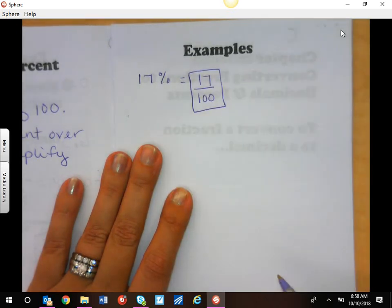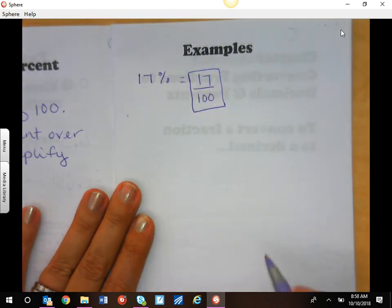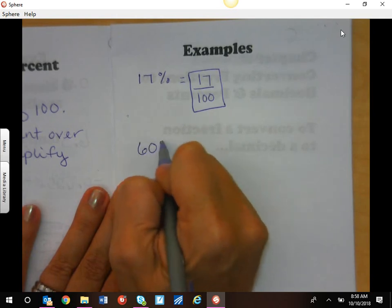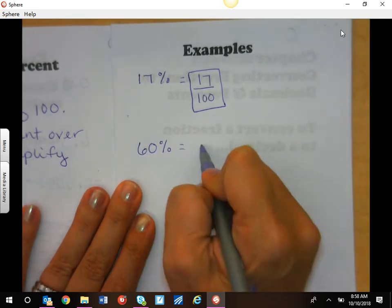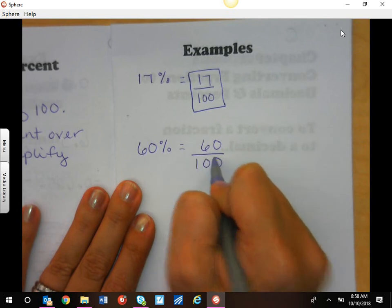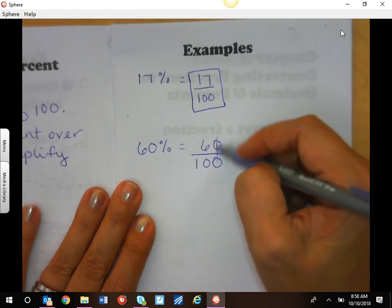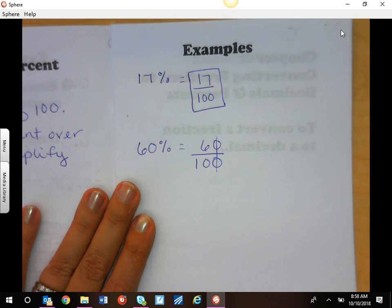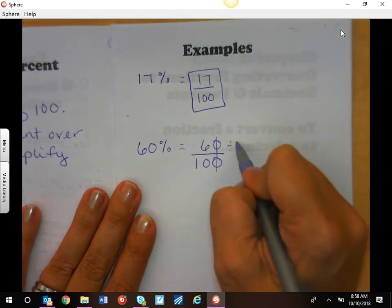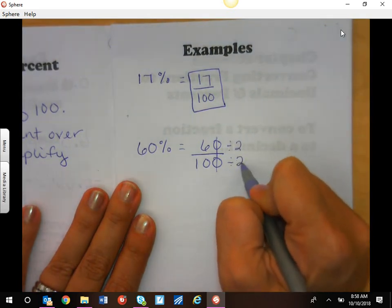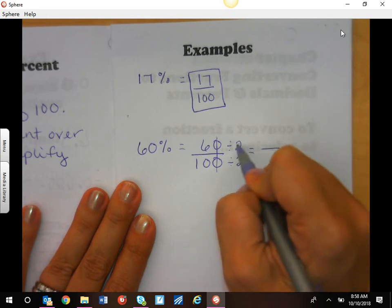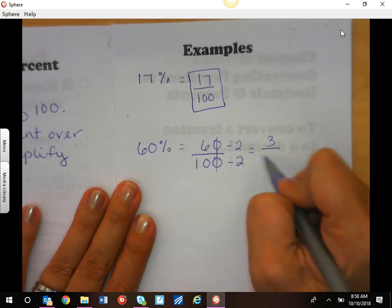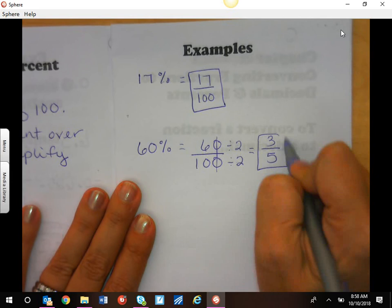But what if I gave you 60 percent? Well, I can write 60 over a hundred. I know I can cross out those zeros for six tenths, which also simplifies by two. Two goes into six three times, two goes into ten five times.